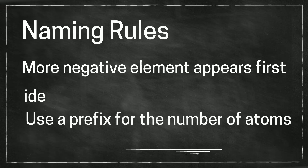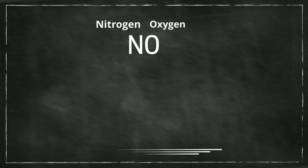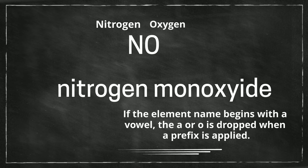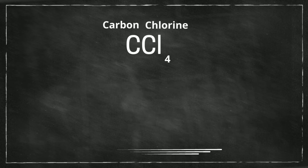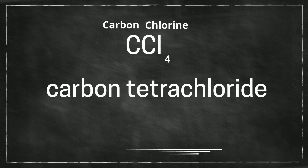So let's look at some examples. The first one is nitrogen monoxide. This next one is carbon, and notice that there are four chlorines, so it will be carbon tetrachloride — tetra for four — and then we're adding the ide.